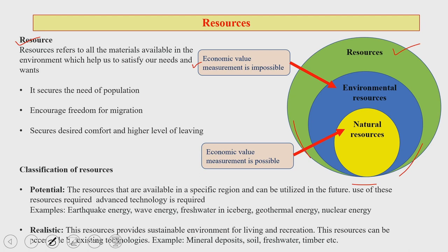Looking at this circle diagram, there is one external circle — the larger domain of overall resources. Inside this large green circle there is a blue circle which designates environmental resources, and the economic value measurement of environmental resources is almost impossible. Finally, we have the small inner circle which we call natural resources, whose economic value you can measure.